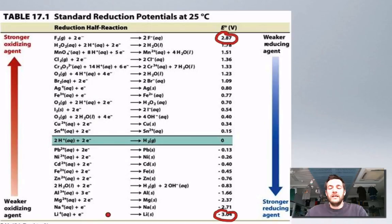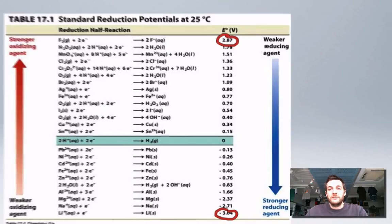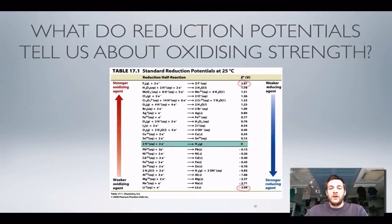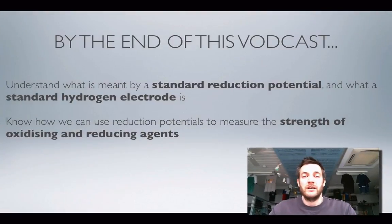Now it's not really all that important that you can explain that in a test, but it is important that you can look at your data sheet and remember that the things that are in the top left corner are very strong oxidizing agents, whilst the things that are in the bottom right hand corner are very strong reducing agents. So anyway, that basically covers what we mean by reduction potentials and how we measure them.